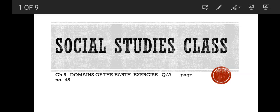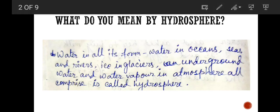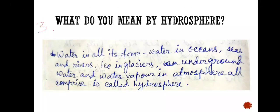So students, let's start. First is question number three. What do you mean by hydrosphere? Water in all its forms - water in oceans, seas, and rivers, ice in glaciers, underground water, and water vapor in atmosphere - all comprise is called hydrosphere.